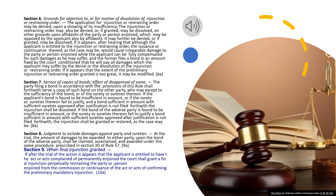Section 6. Grounds for objection to, or for motion of dissolution of, injunction or restraining order. The application for injunction or restraining order may be denied, upon a showing of its insufficiency. The injunction or restraining order may also be denied, or, if granted, may be dissolved, on other grounds upon affidavits of the party or person enjoined, which may be opposed by the applicant also by affidavits. It may further be denied, or,